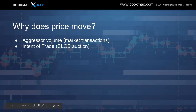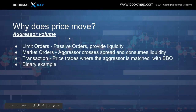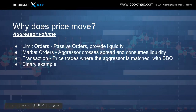Why does price move? Aggressor volume explained. Limit orders are passive — they sit or rest within the depth of market, providing liquidity, wanting to be buyers or sellers within those specific areas on the price ladder. Market orders are the aggressor — they cross the spread and consume the liquidity in the depth of market, consuming those limit orders. This is the classification of volume we'll be looking at: the aggressor, or market orders. Price trades where the aggressor is matched with the liquidity in the best bid or offer.